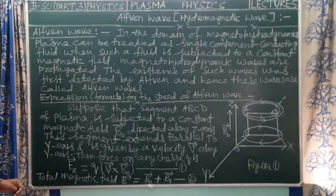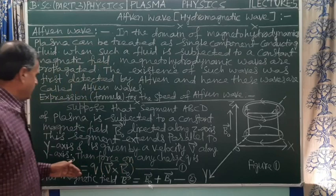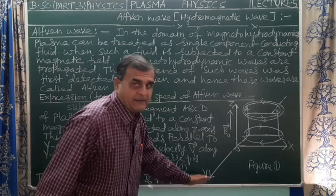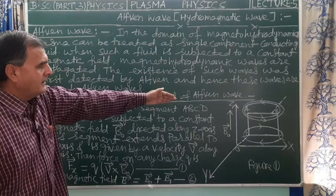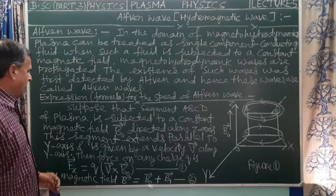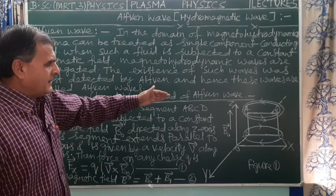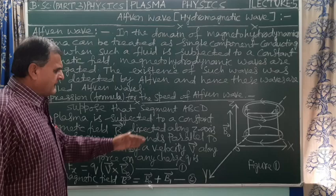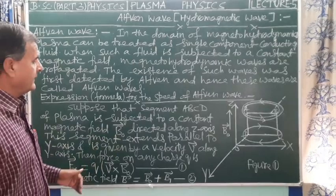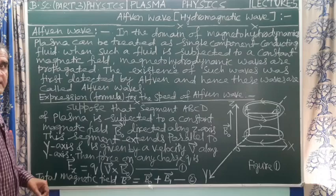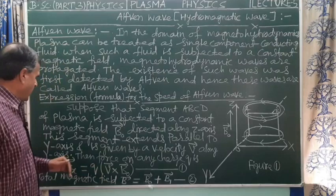Suppose the segment ABCD of plasma extends parallel to the y-axis, and is given a velocity v vector along the y-axis. Therefore, the Lorentz magnetic force on any charge q whose motion is along the y-axis is given by fx, where fx is the force acting on charge q moving along the y-axis.